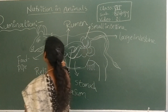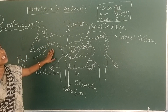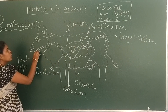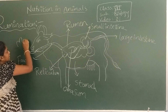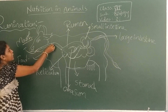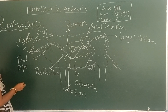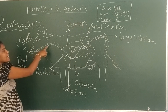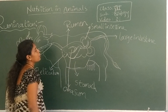Now look at the diagram of the cow. In a cow, there are different parts present in its digestive system. The first part is the mouth, and the mouth is automatically connected to the food pipe, which is also known as the esophagus.